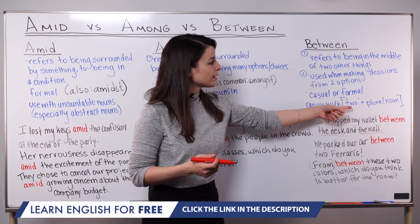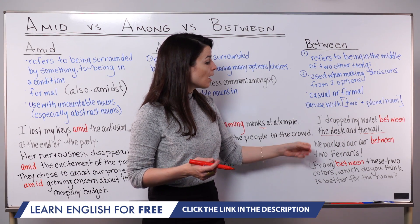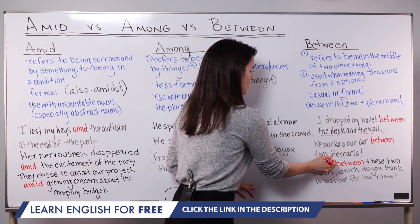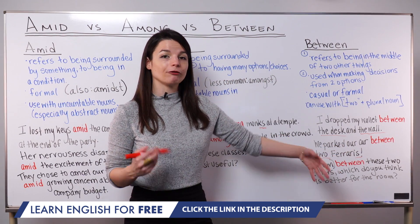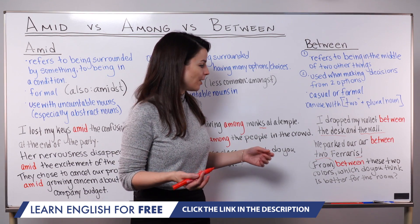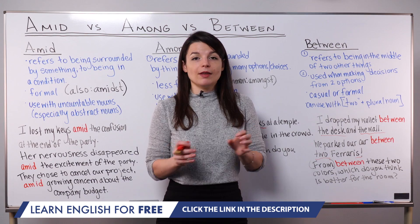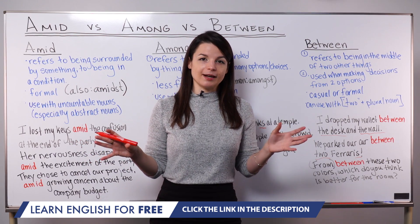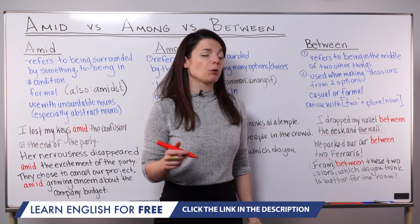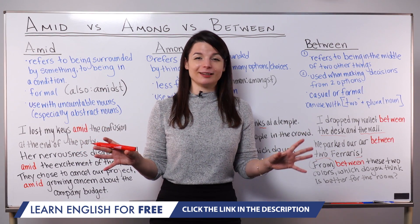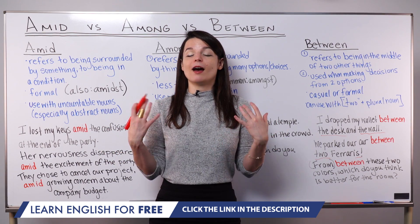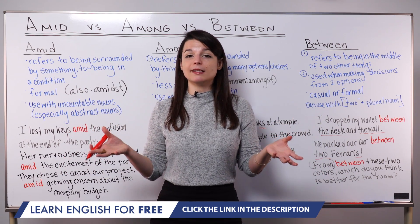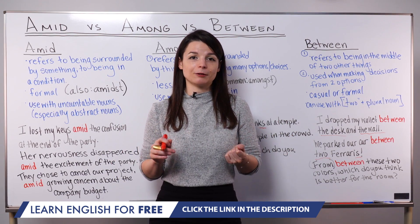Second example uses the two-plus-plural pattern: We parked our car between two Ferraris. A Ferrari is an expensive sports car. This shows that on both sides of our car there was a Ferrari — one on this side and one on this side. It sounds better to say two Ferraris than to say between a Ferrari and a Ferrari, which sounds a little unnatural. So if both sides are the same thing, you can use the pattern two plus the plural noun.